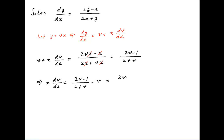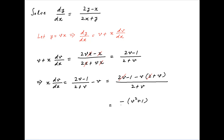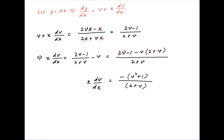This is equal to 2v minus 1 minus v times 2 plus v, divided by 2 plus v. The right hand side simplifies to minus, in brackets, v squared plus 1, divided by 2 plus v. This is equal to the left hand side, which is x times dv upon dx.